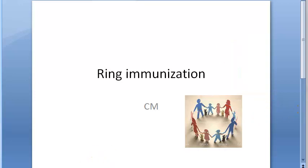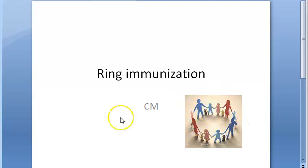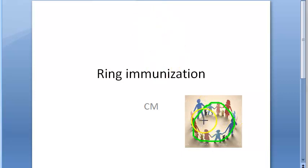These people were in contact with the infected patient before, so they are the people surrounding the infected patient. These are a group of vaccinated individuals. Definitely the disease cannot spread now — it will remain contained with the infected person. The principle is that it prevents the spread of highly infectious diseases by surrounding the patient with a ring of immunization, preventing the disease from coming out of this ring.